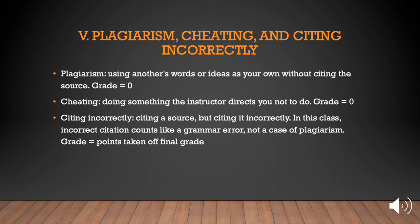Citing incorrectly means citing a source but citing it incorrectly or incompletely. In this class, incorrect citation counts like a grammar error, not a case of plagiarism. Some instructors count incorrect citations as cases of plagiarism — I do not. The grade for citing incorrectly in this class will be points deducted from your final grade for that assignment.